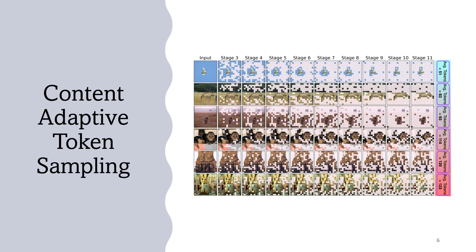To demonstrate the dynamicity of our approach, we selected several images from the ImageNet validation set with various amounts of details and complexities, and visualized the gradual token sampling procedure for these images. Our adaptive model samples a higher number of tokens when the input images are more cluttered, while the sampled tokens are more scattered in images with more details compared to more plain images.